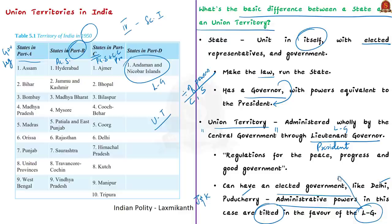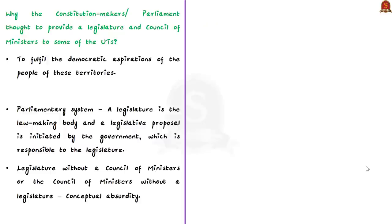Coming back to the article: if the ruling party in the union territory and at the center are different, as in the case of Puducherry, it becomes very difficult to administer for the ruling government in the union territory. The basic question is why the constitution makers or parliament thought to provide a legislature and a council of ministers to some union territories.